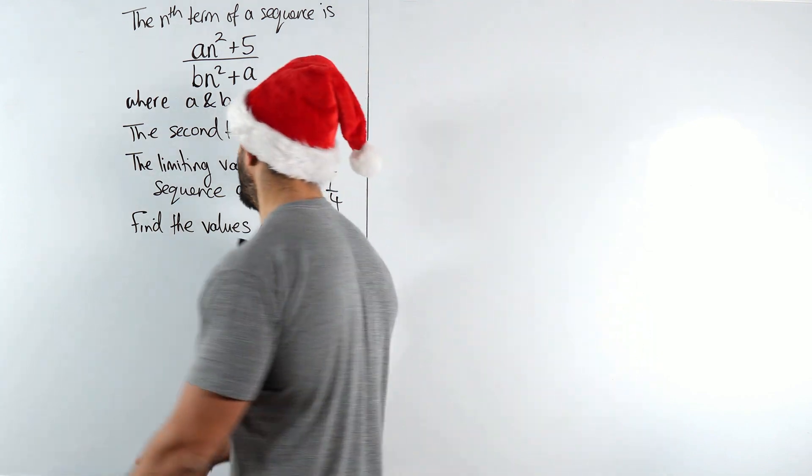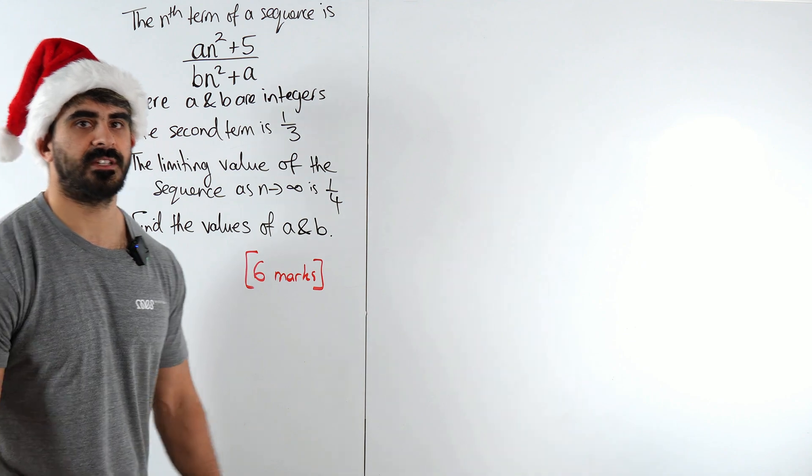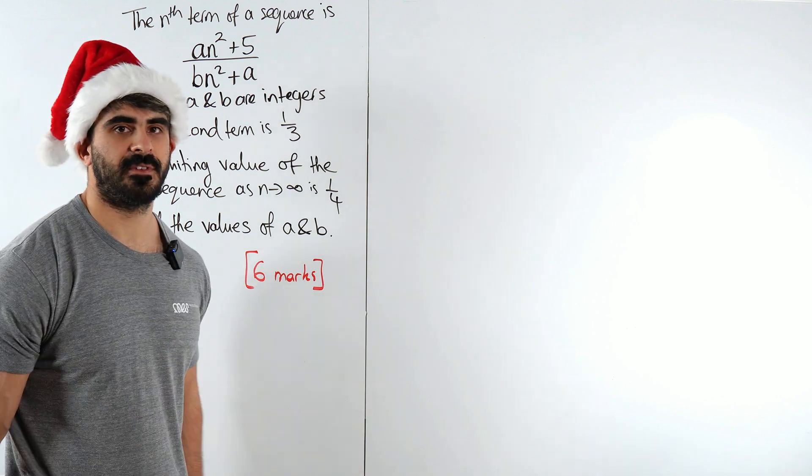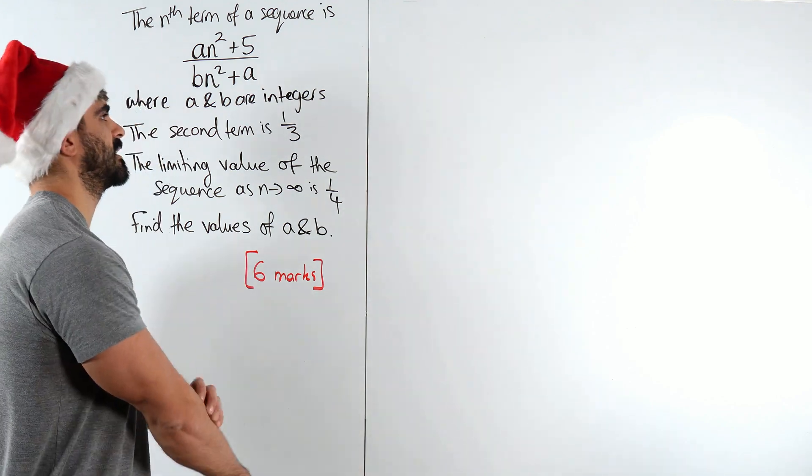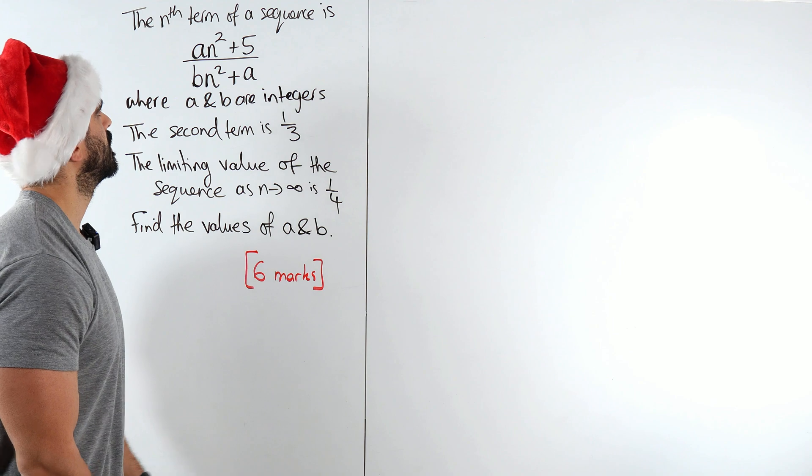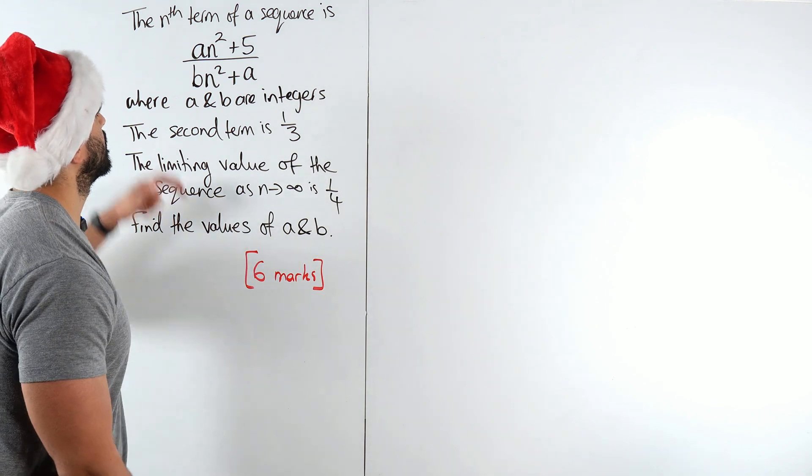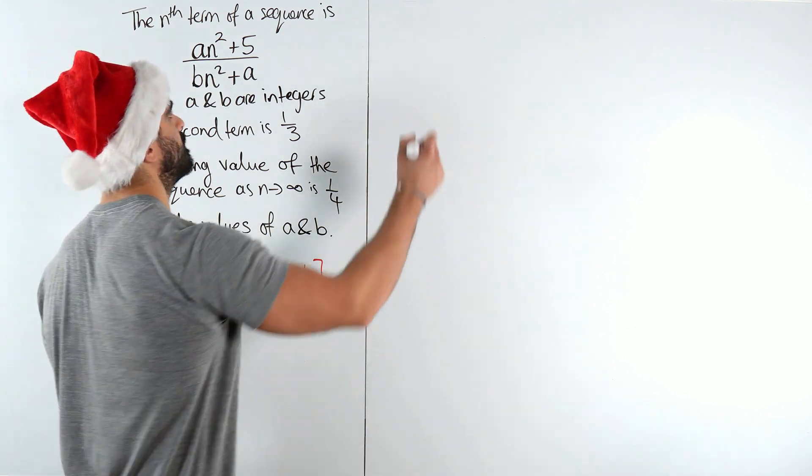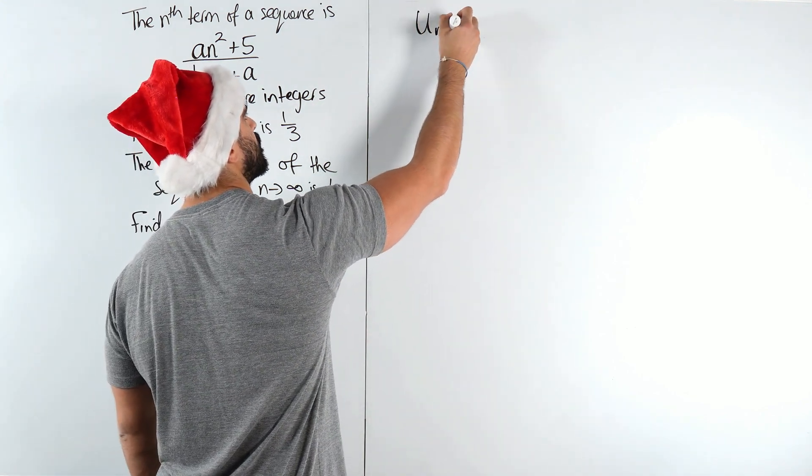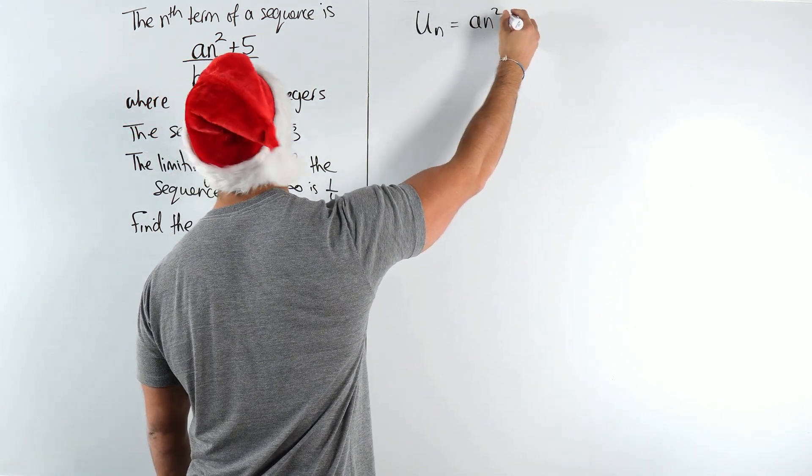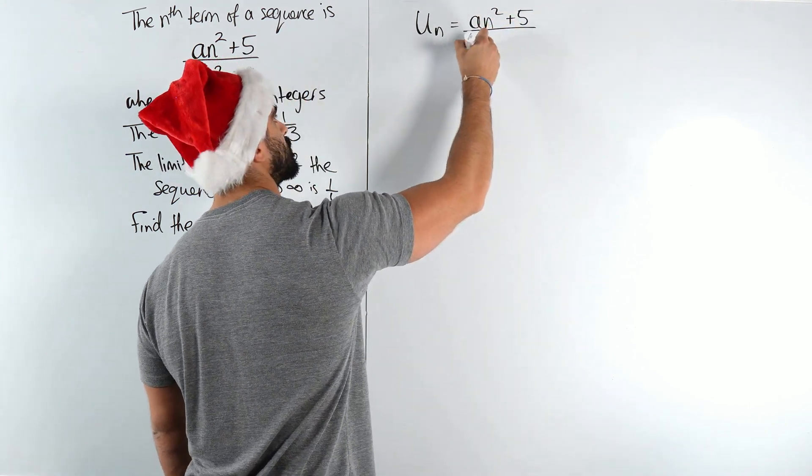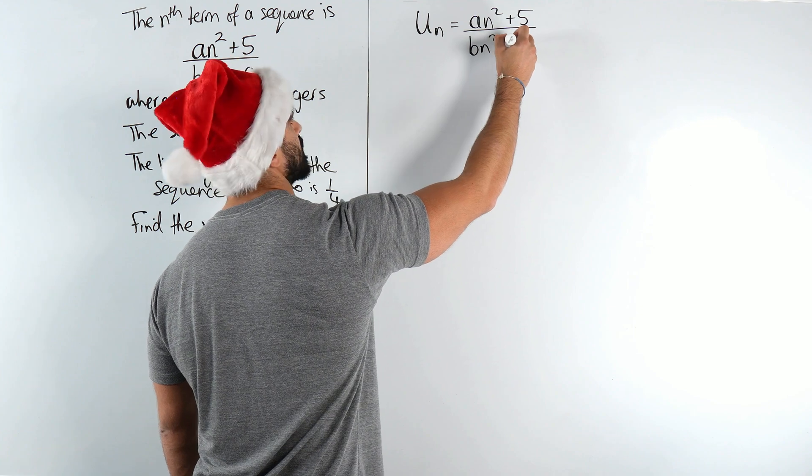Alright, this one was sent to me by one of the Leung Gang. They DM'd me on Reddit, but guys, on my Reddit, just post on the main feed. It's better that way because then we can discuss it as well. Alright, so limiting sequences. Now the better way to write this stuff is un, the formal way of writing things, is an² + 5 over bn² + a.